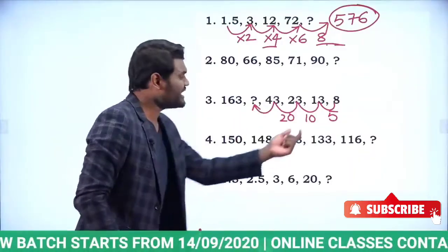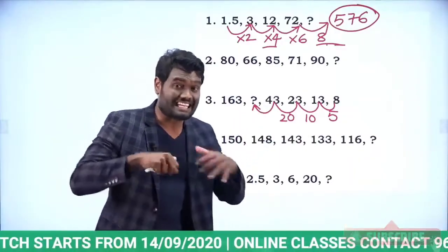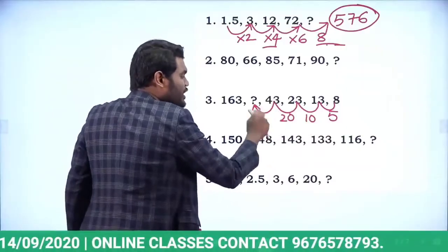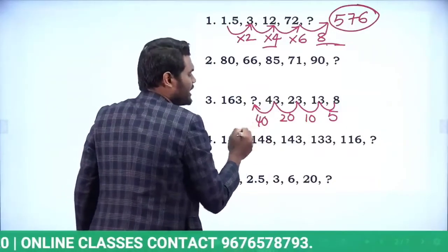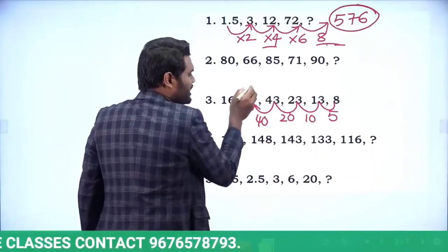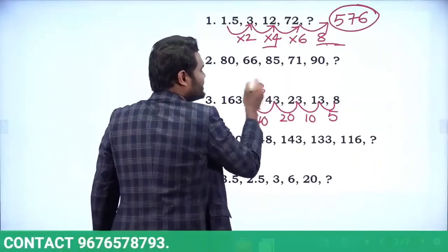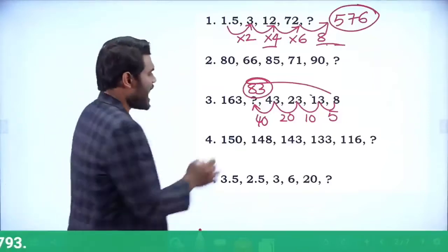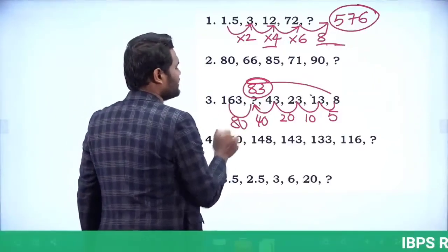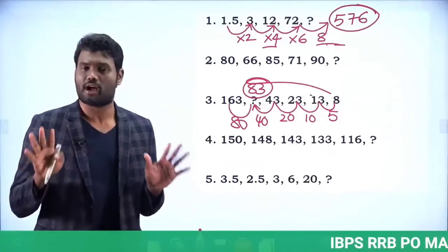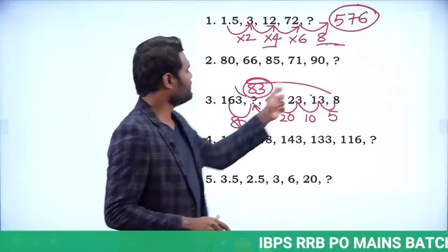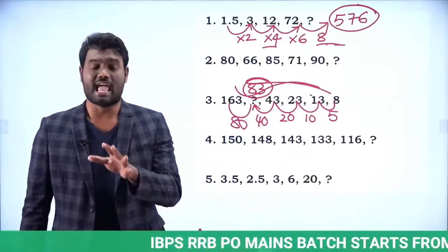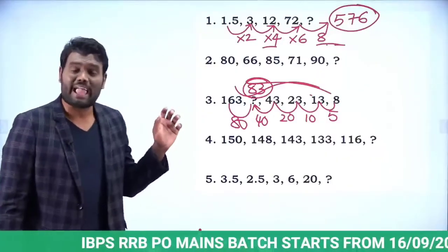The differences are 5, 10, 20 — each doubling. So the next difference should be 40. That means 43 plus 40 is 83. The answer for this question is 83.